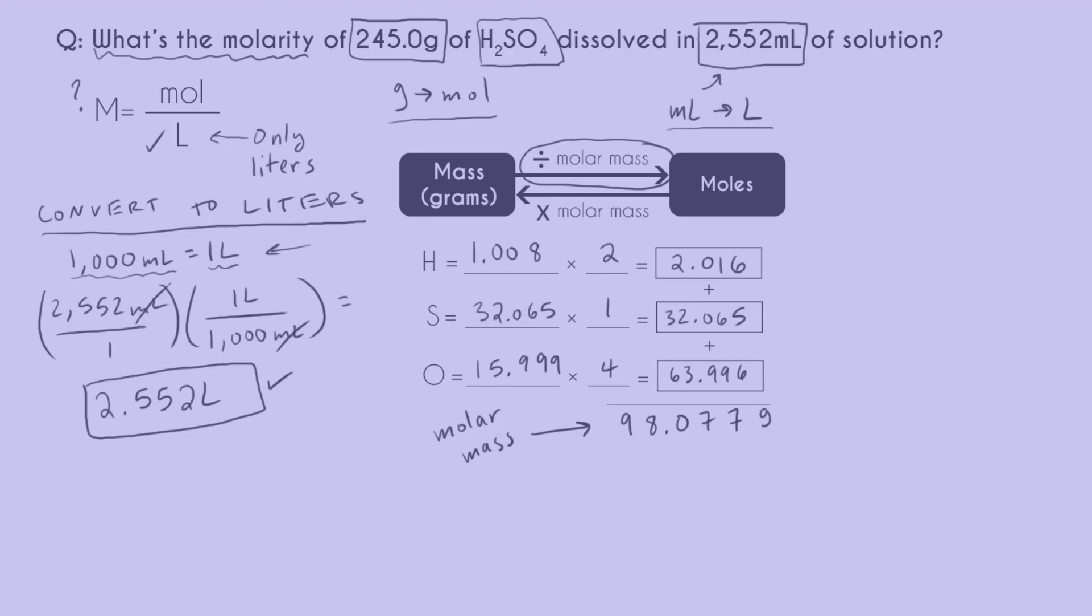98.077 is my molar mass. Remember, this is in grams per mole. In my calculation, I've been pretty loose with sig figs. I'm not thinking about that yet. I'm not going to think about any sig figs until the very end of the problem. All I'm doing is looking up at my original problem and saying, okay, I have one, two, three, four sig figs, one, two, three, four sig figs.